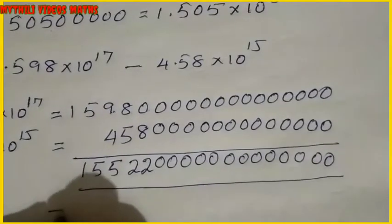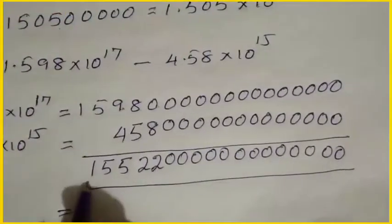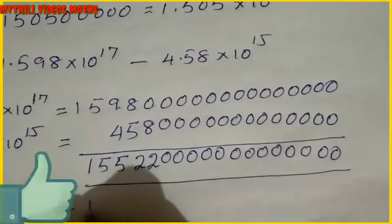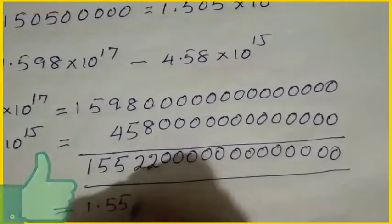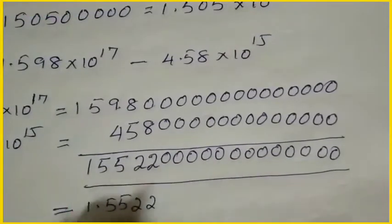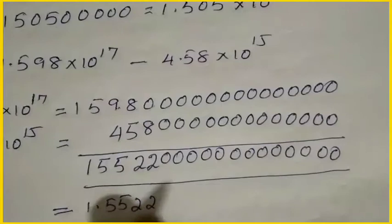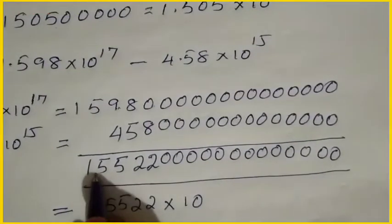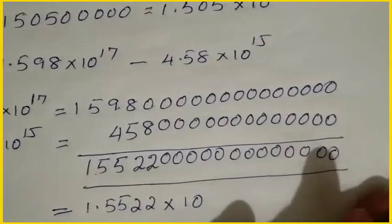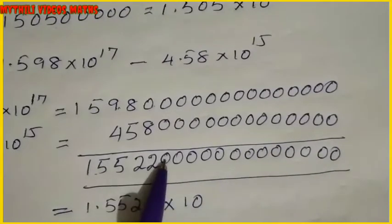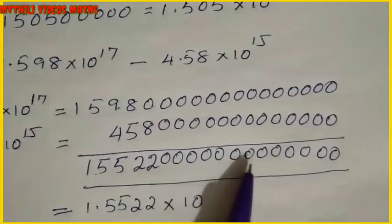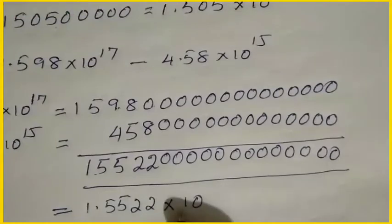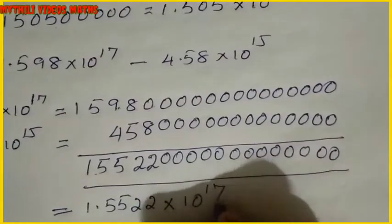Writing the answer directly: the result equals 1.5522 — that is the leading part. Counting the remaining digits, positions 1 through 17 are there. So the final answer is 1.5522 into 10 power 17.